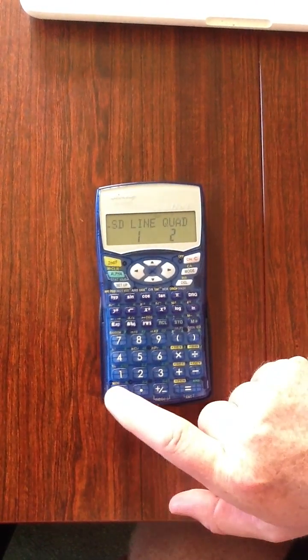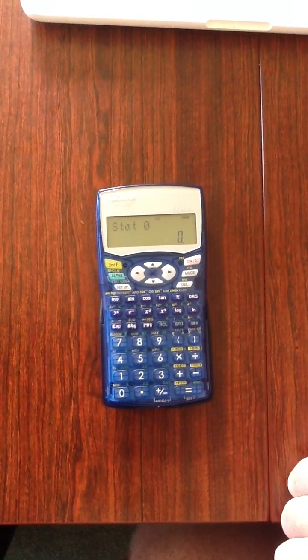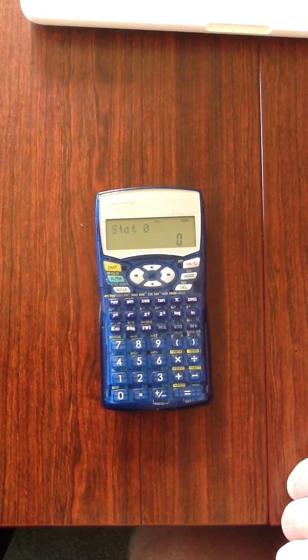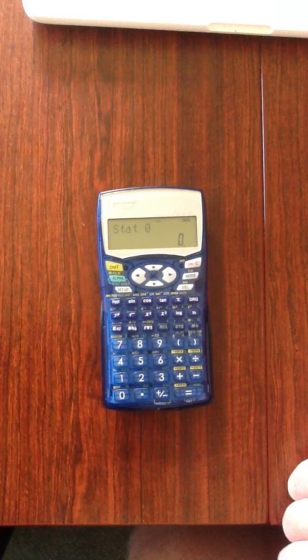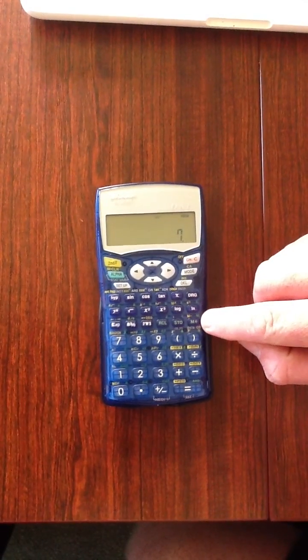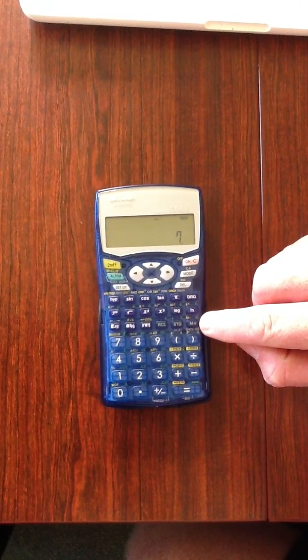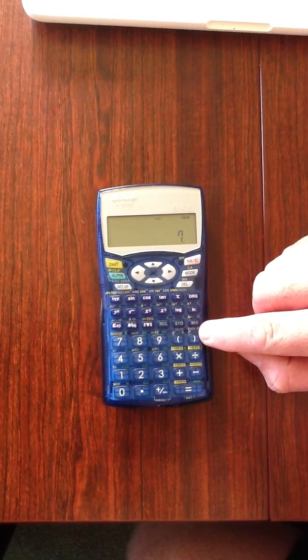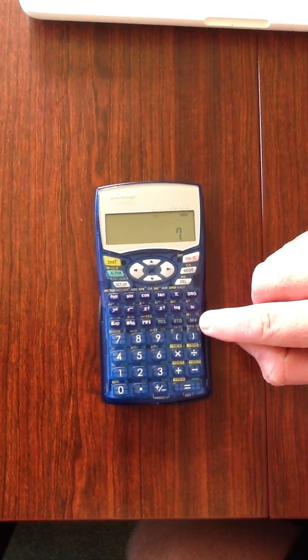We then press 0 to enter statistics mode. To enter the data, you press your data, so say 7, and then M+. You see just below the M plus button is data. You're actually entering the data.